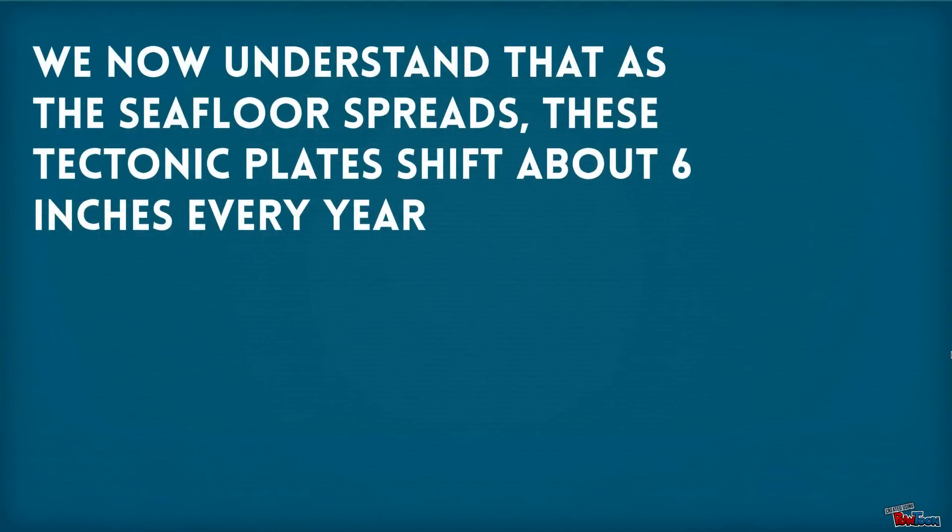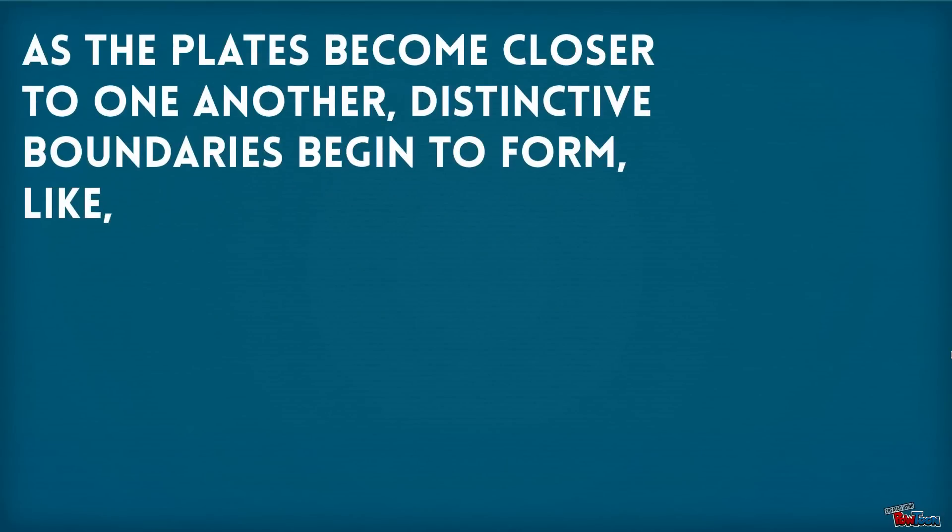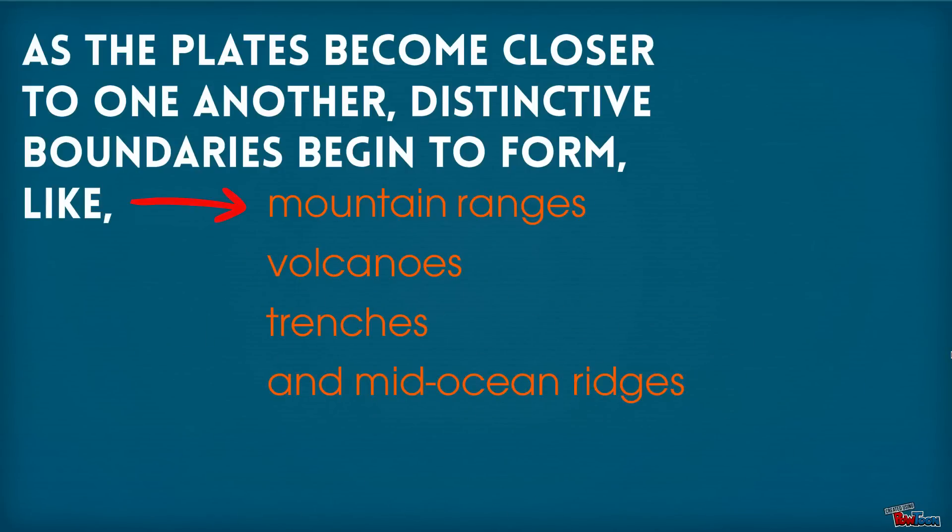We now understand that as the seafloor spreads, these tectonic plates shift about 6 inches every year. As the plates become closer to one another, distinctive boundaries begin to form like mountain ranges, volcanoes, trenches, and mid-ocean ridges.